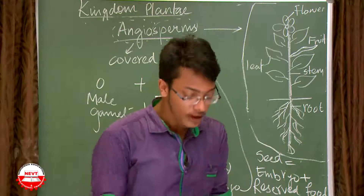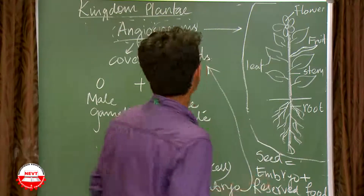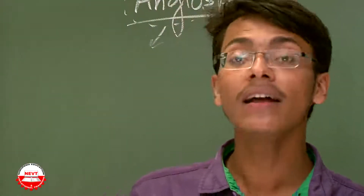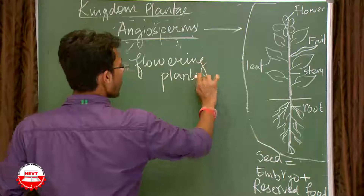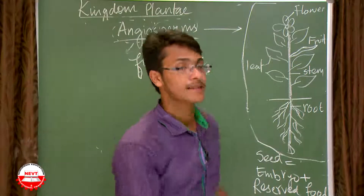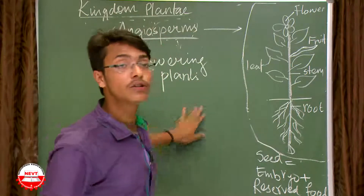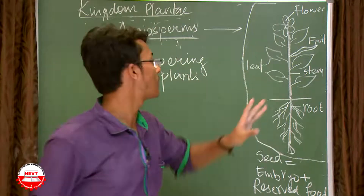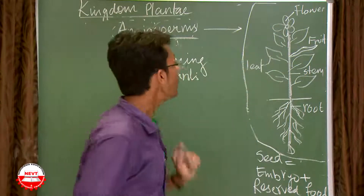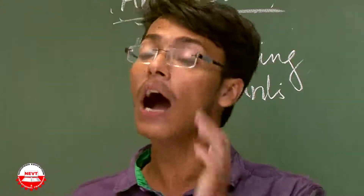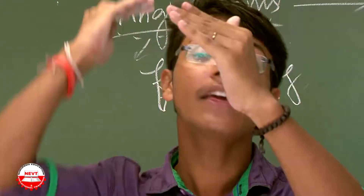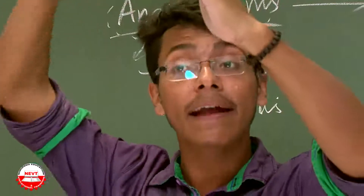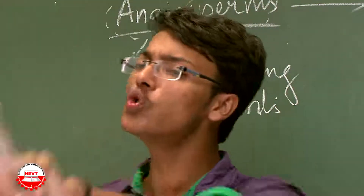Another name for angiosperms is flowering plants, because they have the potential to flower. Following the hierarchy — kingdom, phylum, class — angiosperms have two very important classes.